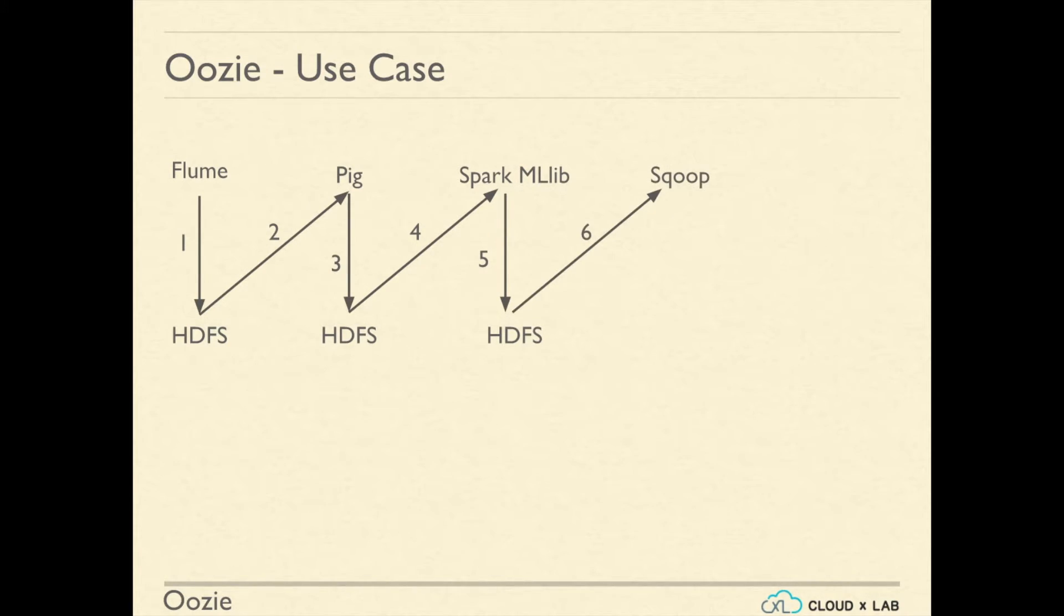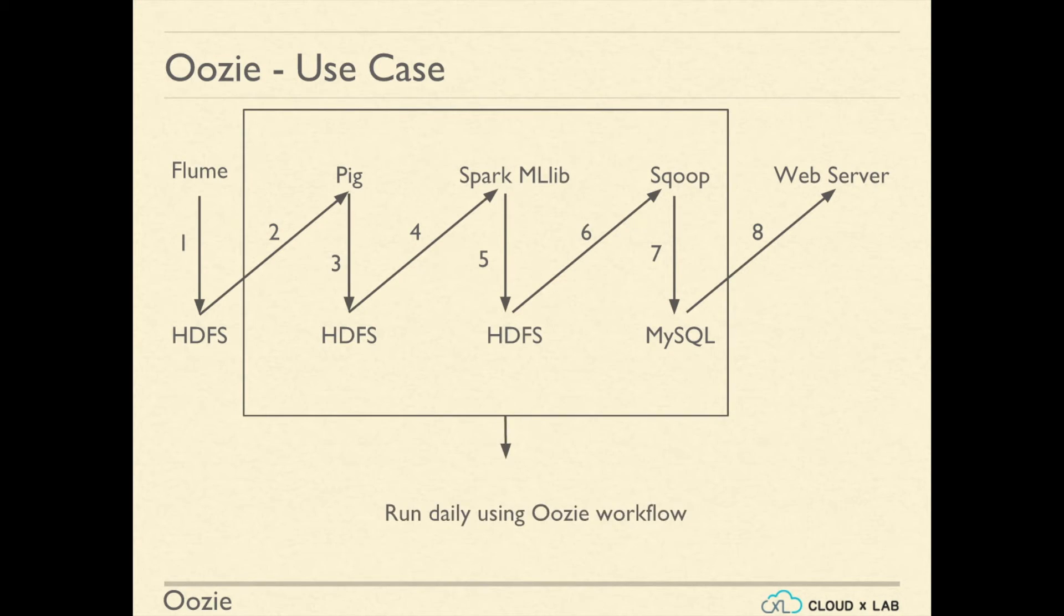Sqoop will take recommendations from HDFS and push it to MySQL. The web server will take the recommendations from MySQL and will display it to the end user. In this use case, step 2 to step 7 can be run as Oozie coordinator jobs daily.